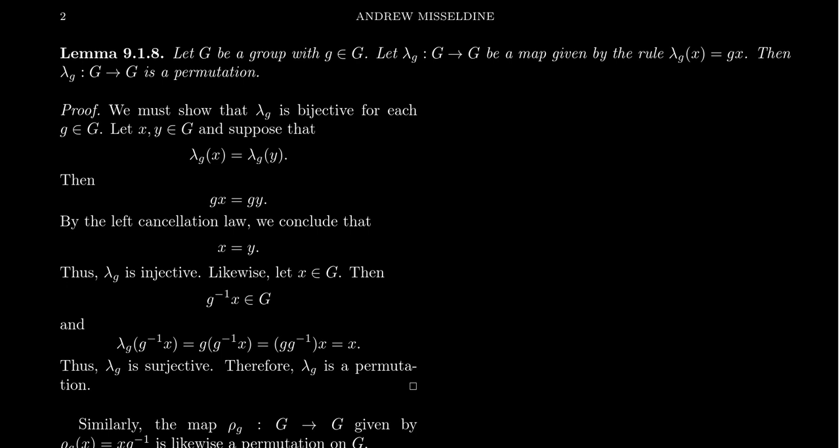Cayley's theorem, which we will prove in this video, allows us to represent every group as a permutation group. It's a very useful result — in some regard, it's almost too useful, like a perfect gift you don't know what to do with. If you can prove something about the symmetric group, it's almost like the Holy Grail, because in some respect it proves it about every group.